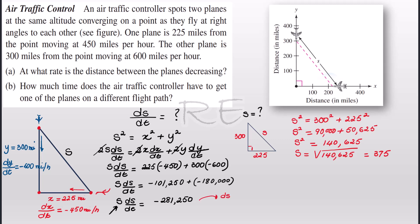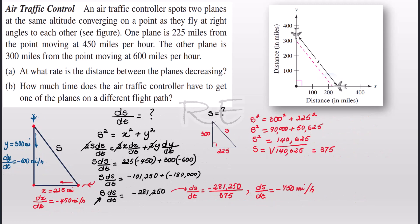Now ds/dt when we divide by s will be negative 281,250 divided by 375. So ds/dt is basically negative 750 miles per hour. It's decreasing at a rate of negative 750 miles per hour.